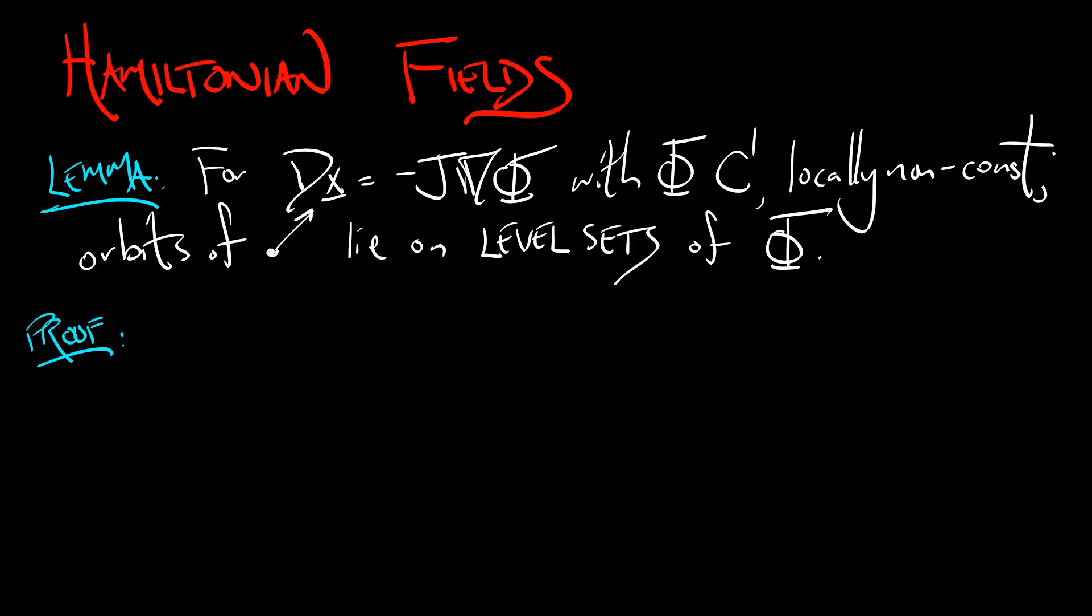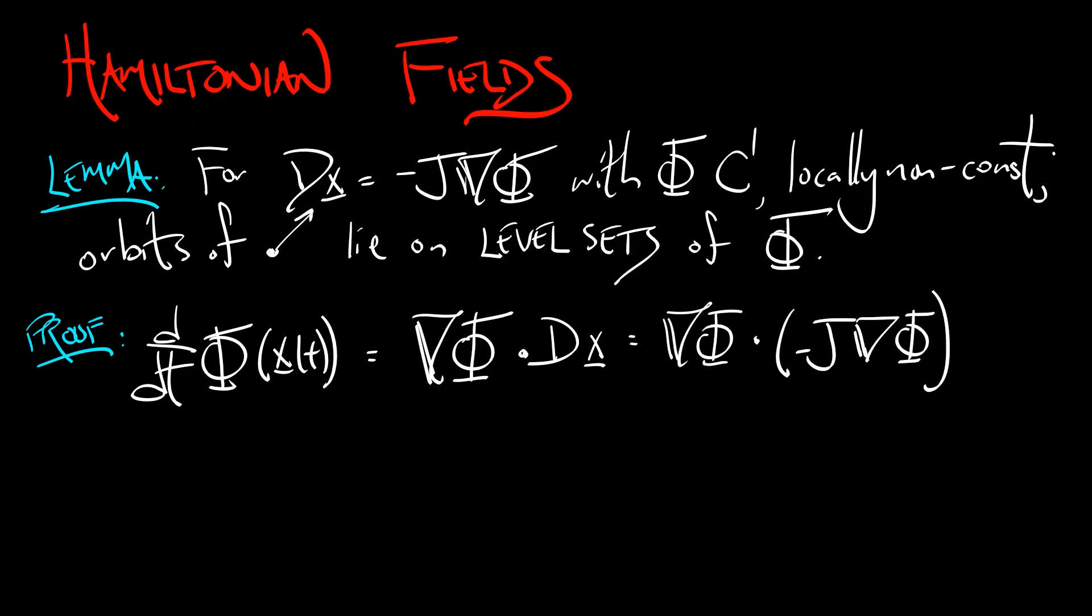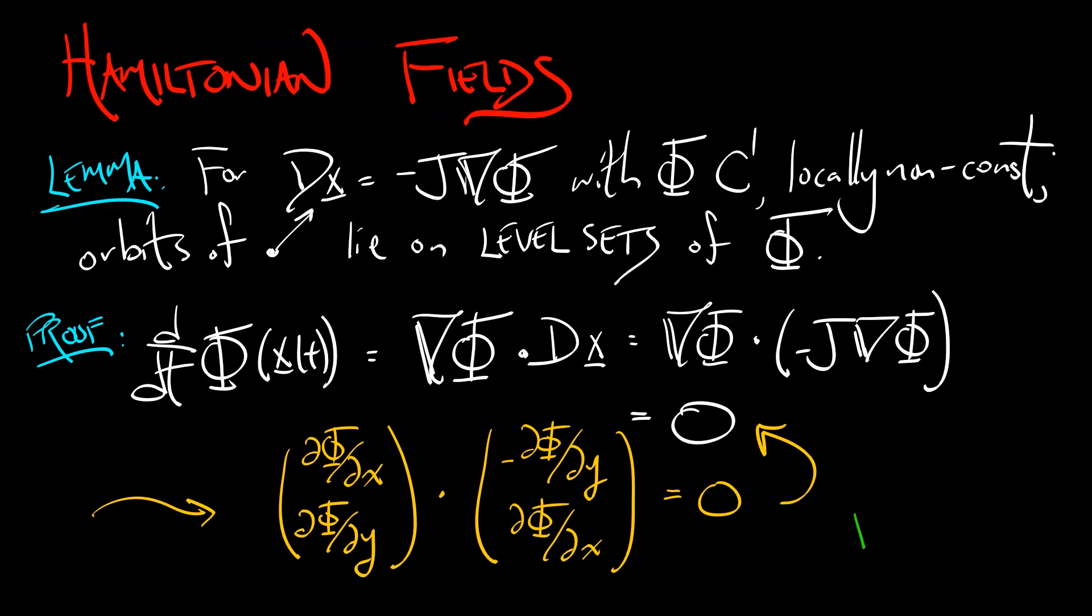If I, again, take the derivative with respect to time of phi along a solution, then I get grad phi dotted with dx dt. And that is grad phi dotted with grad phi, but with a twist applied, something that rotates it by 90 degrees. Of course, that dot product is zero because those vectors are orthogonal. That is basically the same proof that we did in a previous chapter where we wrote things out explicitly in terms of components.